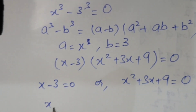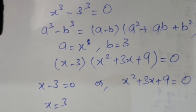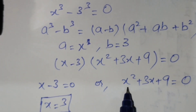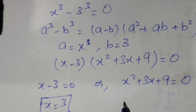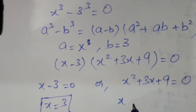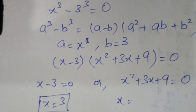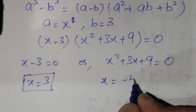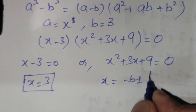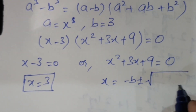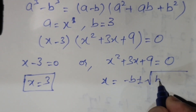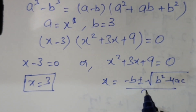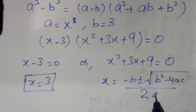For the quadratic equation x squared plus 3x plus 9 equals 0, we will use the quadratic formula: x equals minus b plus or minus the square root of (b squared minus 4ac), all over 2a.